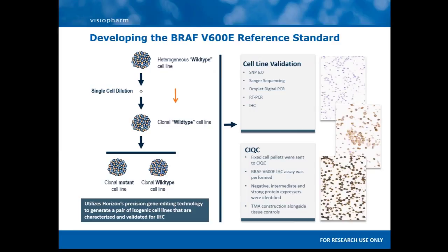All cell lines go through this rigorous level of characterization and validation. We sent CIQC four cell lines: a negative, two intermediate, and a positive cell line. Once CIQC received these cell lines, they quality controlled them in their own laboratories, and as per our staining patterns, there was full concordance between theirs and ours — they identified the negative, intermediate, and strong positive correctly. Once this was done, they constructed the TMAs that Martin showed earlier with the tissues and cell lines, which was then sent to all participants.